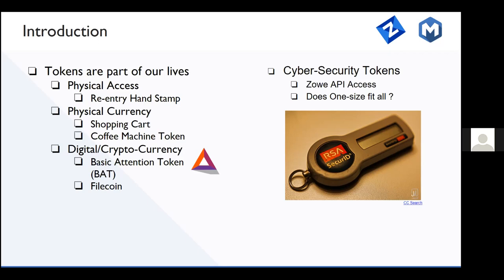The reason we are here today is to talk about the usage of tokens in a security or cybersecurity context — more specifically, about access to Zoe APIs using software security tokens offered to clients via Zoe API ML. We're also here to talk about how we could integrate the mainframe with other domains and platforms more easily by introducing tokens not yet employed in Zoe, and to inspire a conversation about it. We believe that a single type of token used in Zoe today might not cover all future use cases.